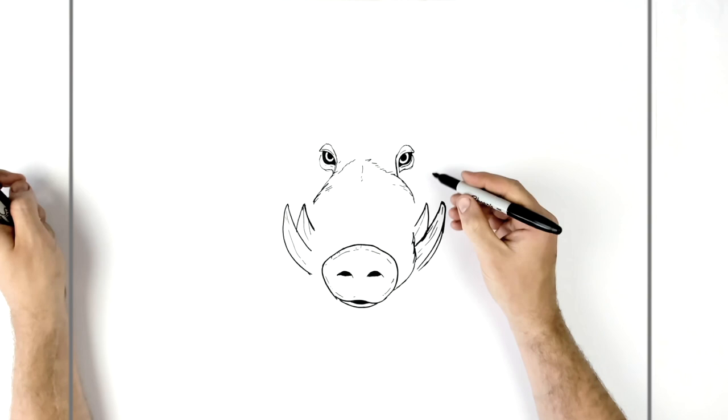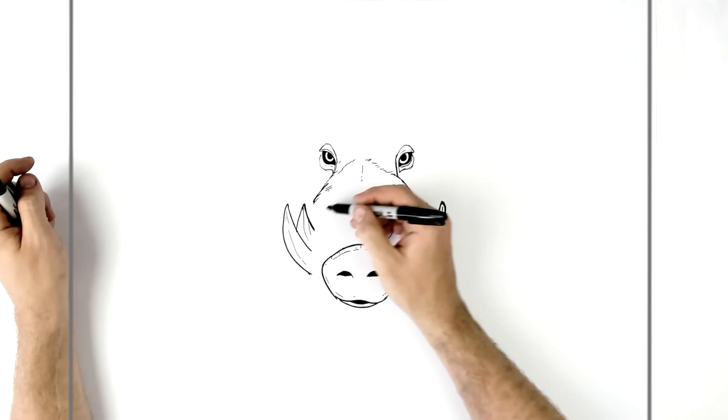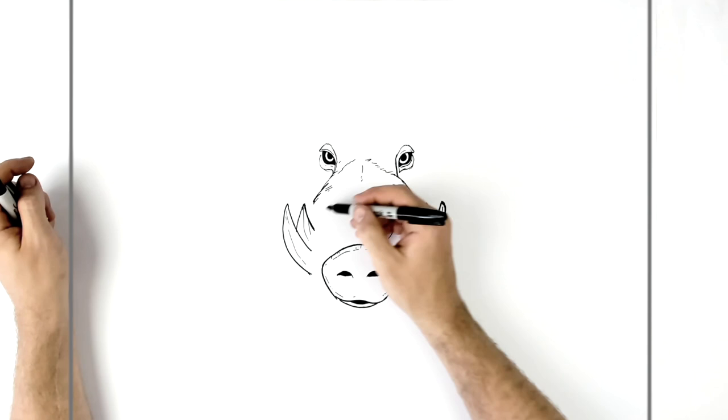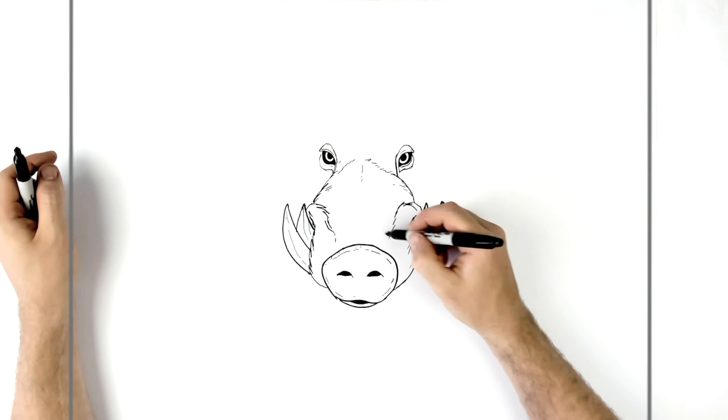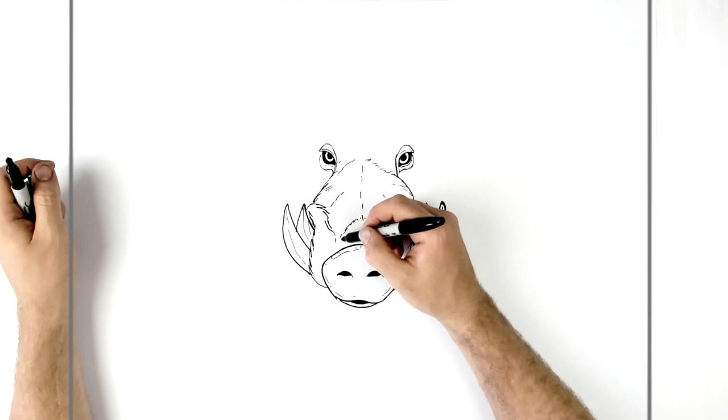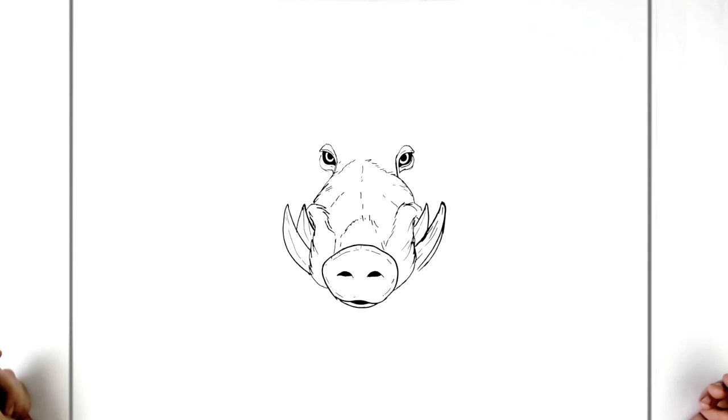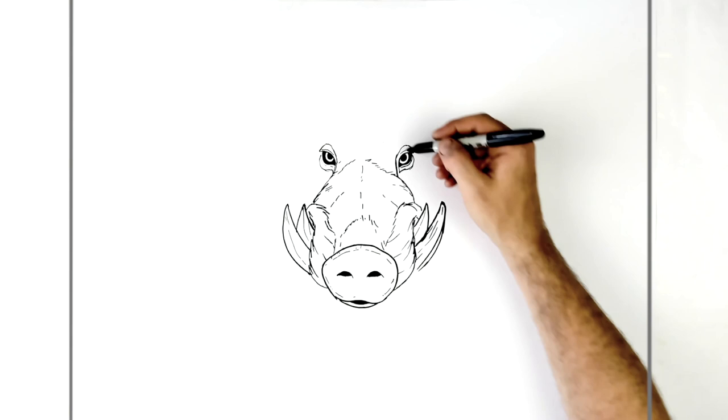And then a fur line that goes around the tusks, so kind of really furry, hairy. Come around here, you can have like texture on that. Same thing on this side, so like real furry going around his mouth, kind of like this. And the side of the snout sort of here. And kind of like that, so this is all furry texture.